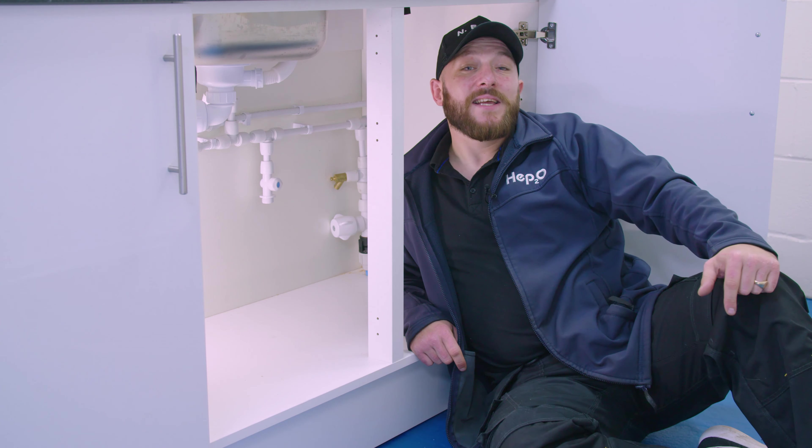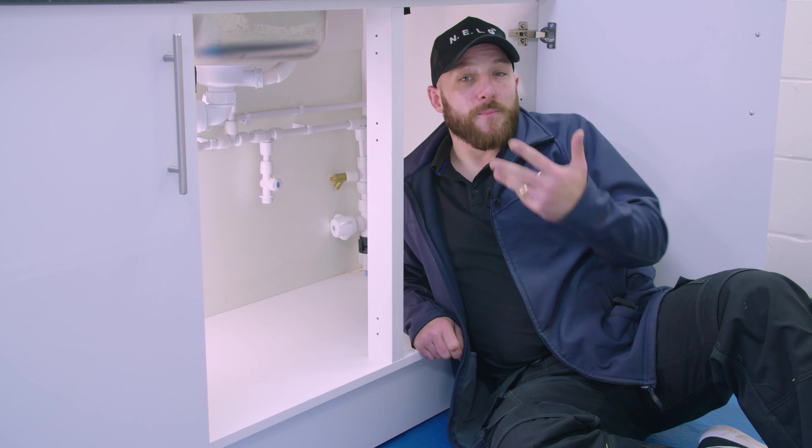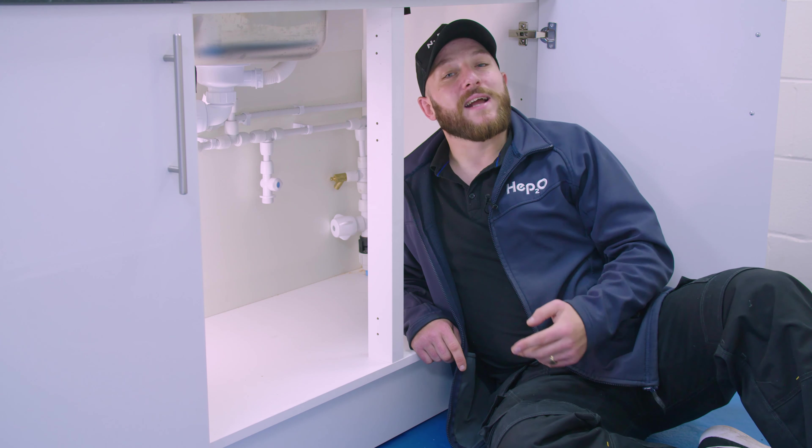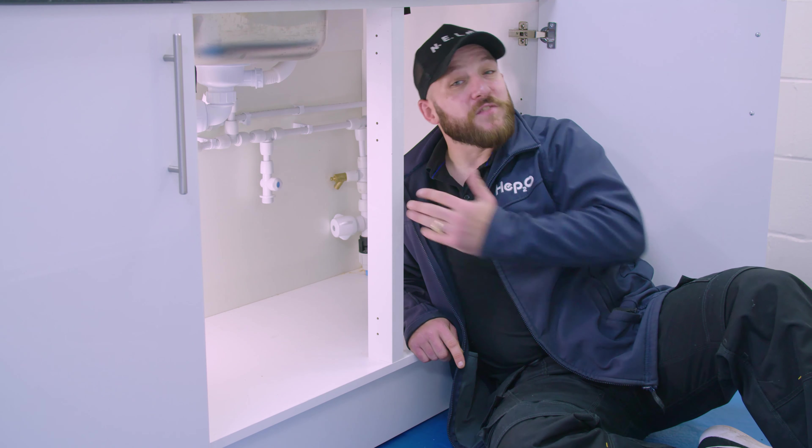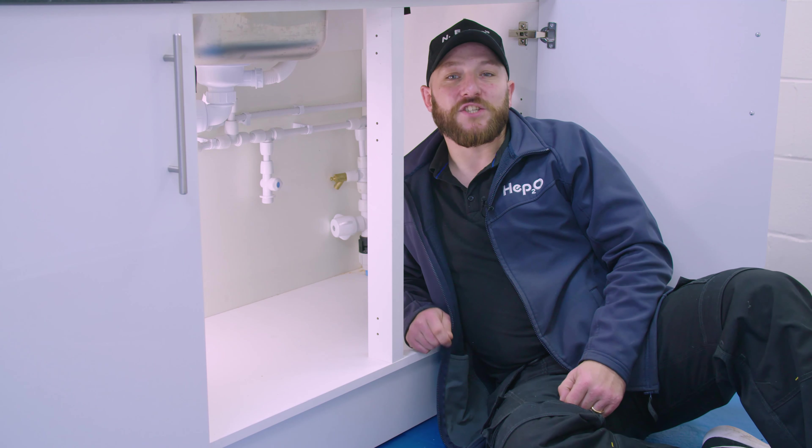We're here to second fix a kitchen sink. What we've got to do is connect the hot and cold supply pipes to the kitchen tap, and we've also got to leave hot and cold connectors ready for the dishwasher and washing machine. The first fix has already been complete, which means there's hot and cold in the cupboard, and we're just making these final connections.